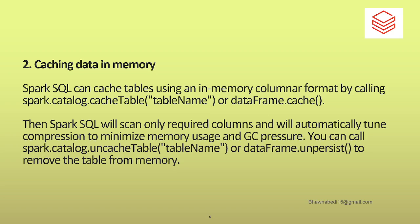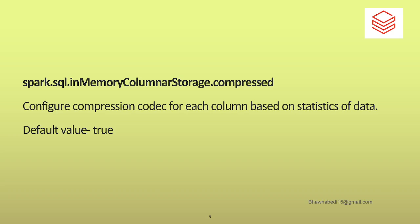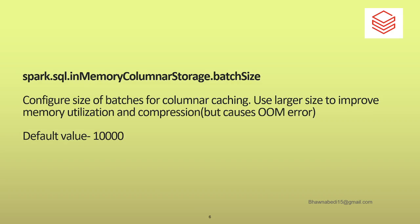Remember that whenever you are caching data in memory, it gets stored in columnar format. When you try to read that DataFrame again, since it is in columnar format, it will automatically scan only the required columns, which helps improve performance. It also compresses the data. Two configurations get automatically enabled when you cache data: the first is in-memory columnar storage compressed, which is enabled by default the moment you cache the DataFrame — it compresses the data in memory when storing it in columnar format. The batch size configuration is also automatically enabled by default, and you can change it as well.